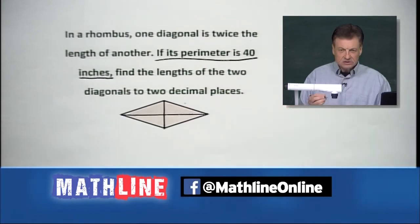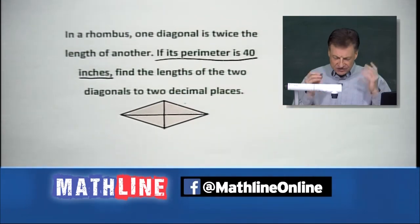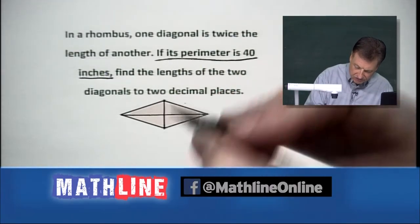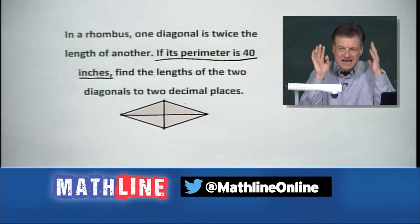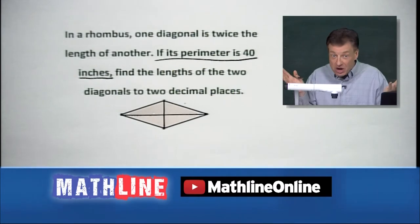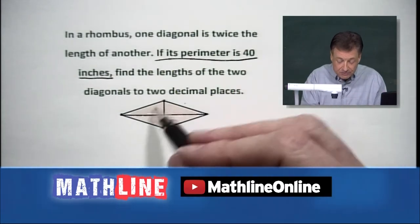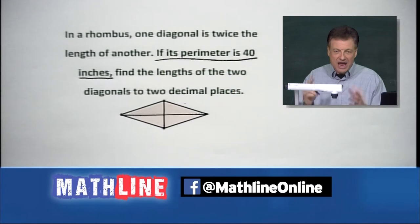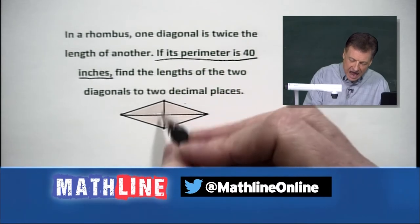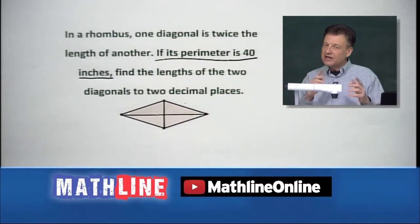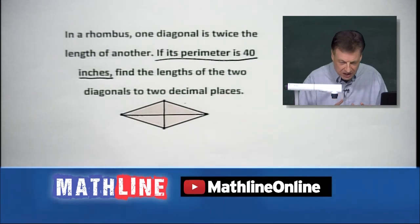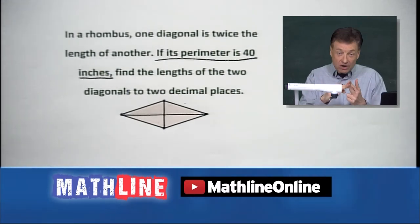And notice something about my diagonals. Since they're connecting vertices, they do a lot of great things here. First of all, they bisect each other because it's a parallelogram. So they bisect each other and they form four sweet little congruent triangles there. Now, those four congruent triangles also have another really cool property. The diagonals have to be perpendicular.